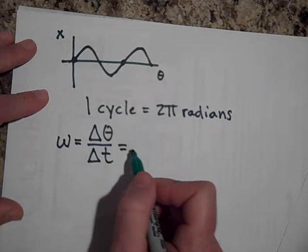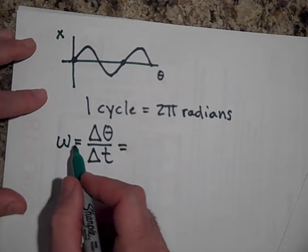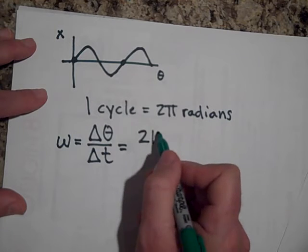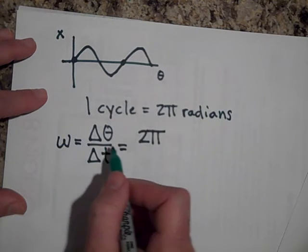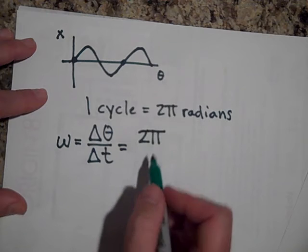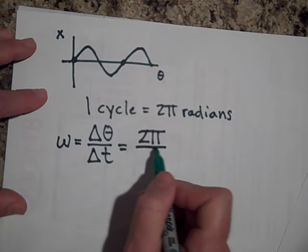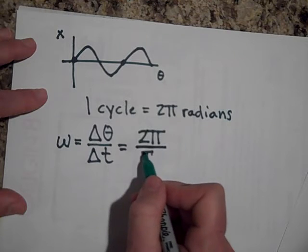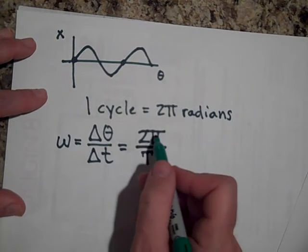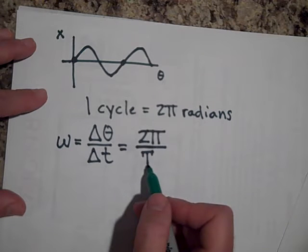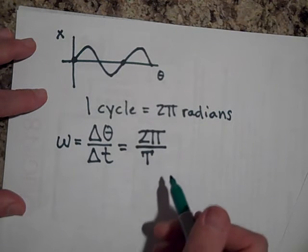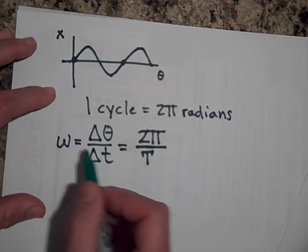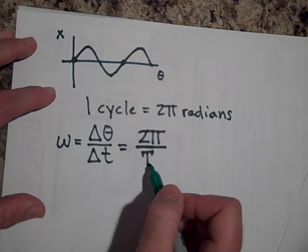But how many radians do you go around in one period? If you go 2π radians, then in the circle that was cast in the shadow, that will take a time of one period. So 2π radians per period, this is called the angular frequency. Okay, so ω is 2π over the period.